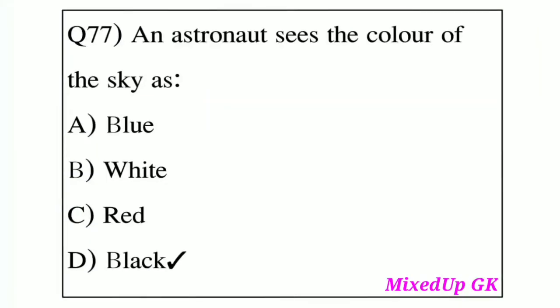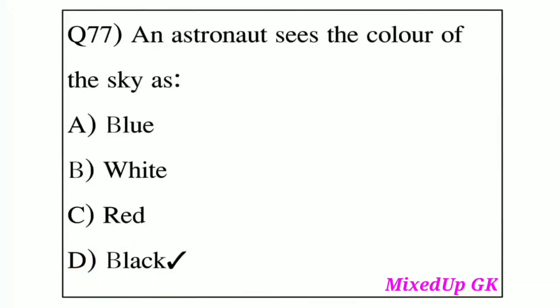Question number 77: An astronaut sees the color of the sky as which color? Option A: Blue. Option B: White. Option C: Red. Option D: Black. The answer is Black — an astronaut sees the color of the sky as black.